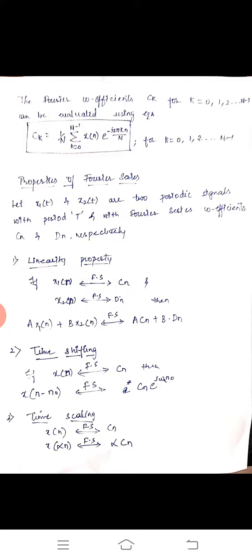The time shifting property states that x(n − n₀) after Fourier series gives C_n · e^(j·ω_n·n₀). In time scaling, x(αn) after Fourier series gives α·C_n. For time reversal, x(−n) after Fourier series gives C(−n).